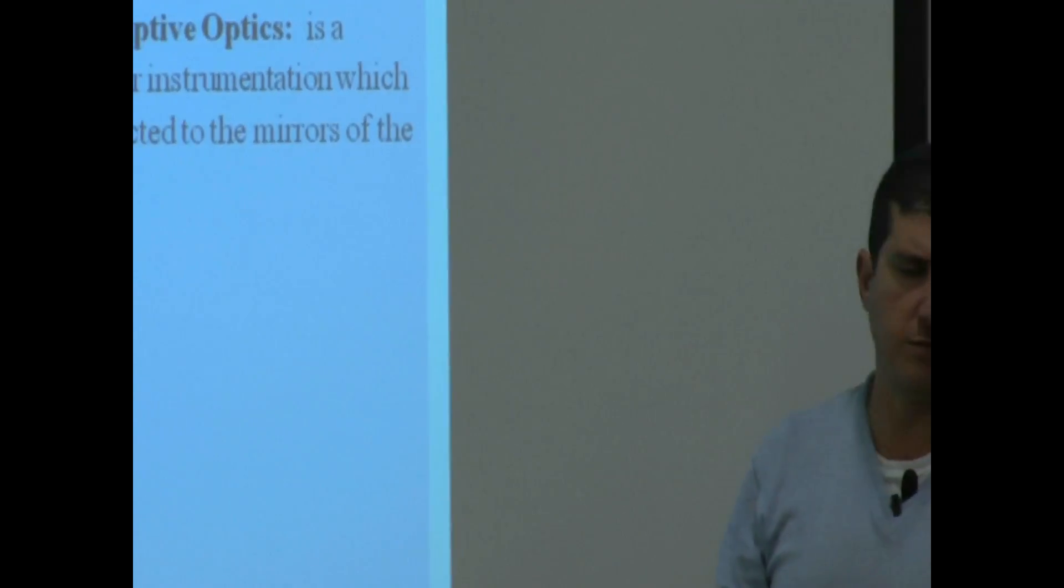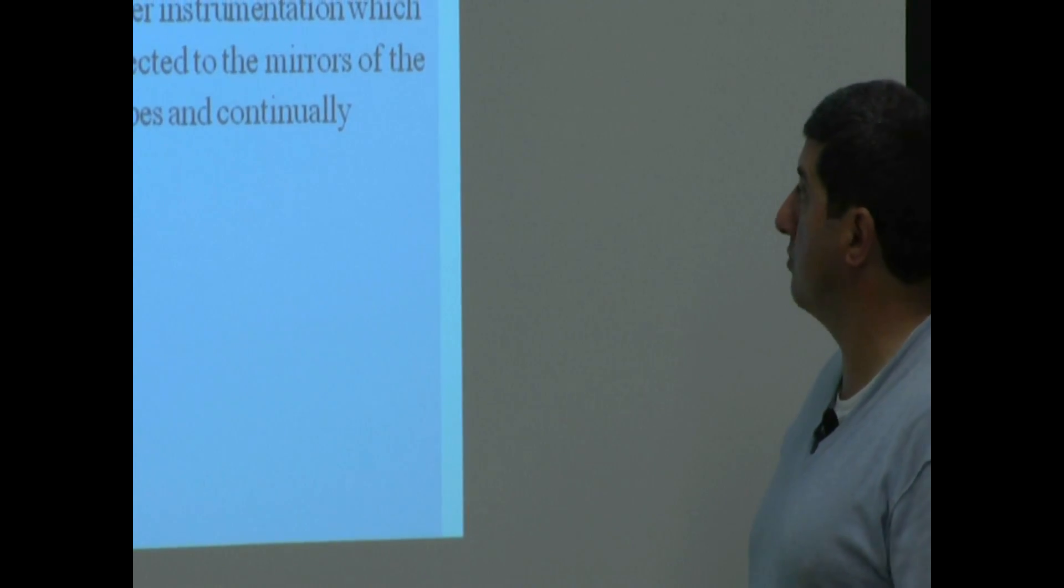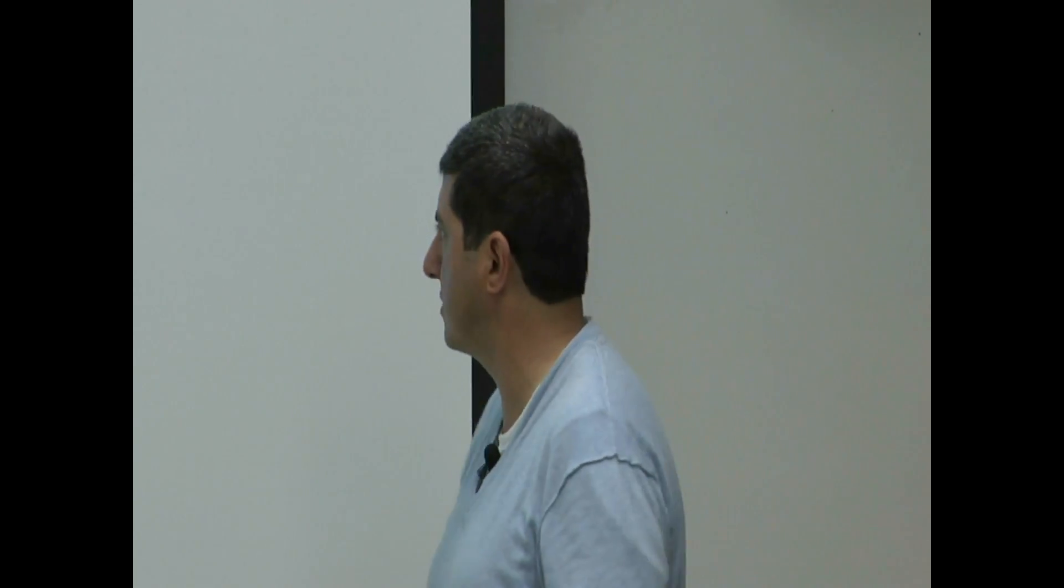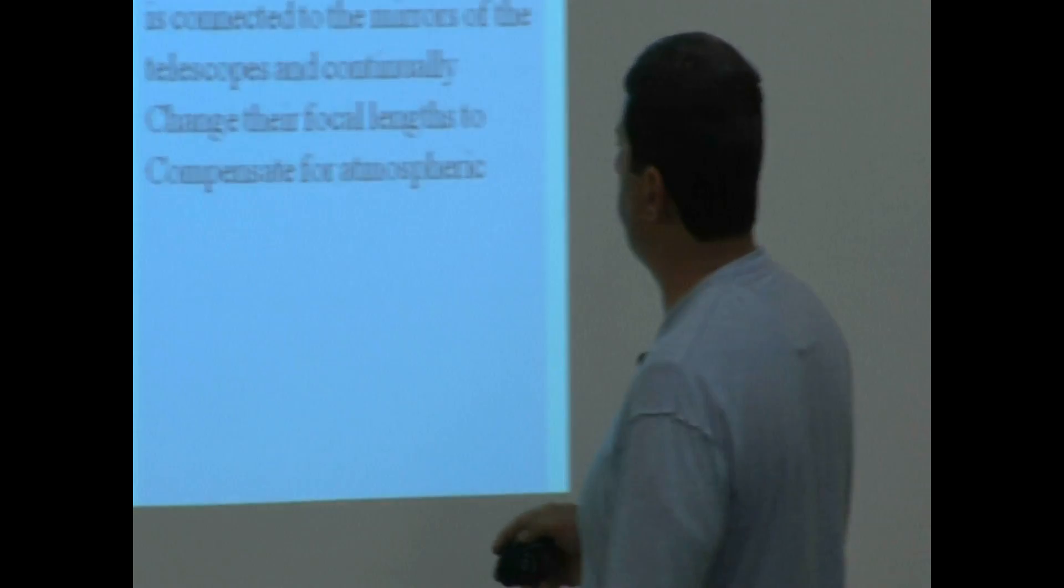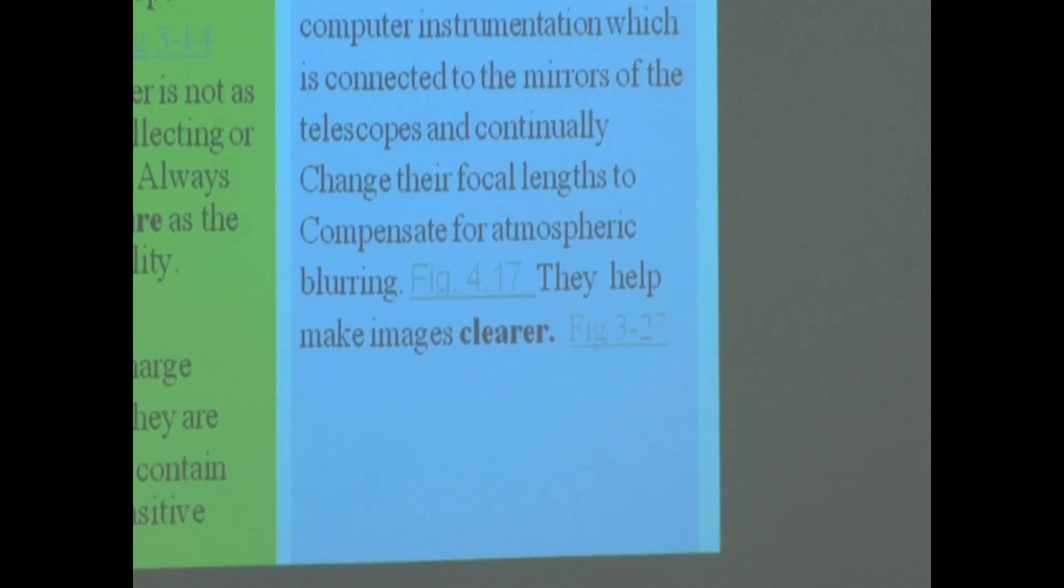They would put all this computer instrumentation, attach it to their telescope, and basically, the idea of the adaptive optics is that it's connected to the mirrors of the telescope and continually fudge and fiddle with the focal lengths of the telescope, continually change their focal length. So, you're constantly adjusting the focal length of the telescope with this computer instrumentation, tiny little fluctuations to compensate for atmospheric blurring. They help make images a lot clearer than they would have been if you don't use adaptive optics.